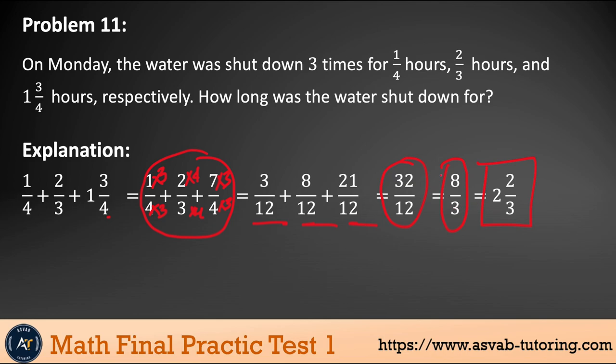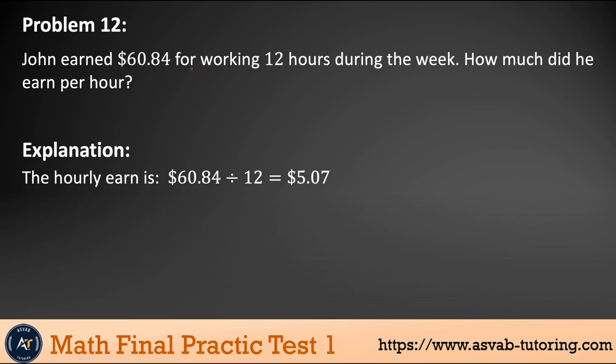Problem 12: John earned $60.84 for working 12 hours during the last week. How much did he earn per hour? It's very simple—you have to divide. But if you don't know how to divide a decimal, you just need to refresh a little bit. So 12 divided into 60.84. 12 goes into 60 five times. Five times 12 is 60. Now move the decimal on the top and bring the eight down. You cannot divide eight by 12, so put a zero on the top, then bring the four down. 12 goes into 84 seven times. Seven times 12 is 84. So that is the correct answer, $5.07.